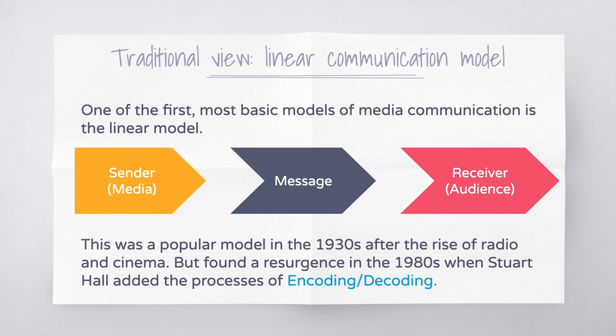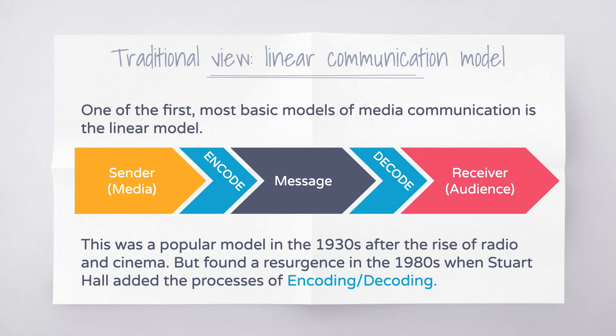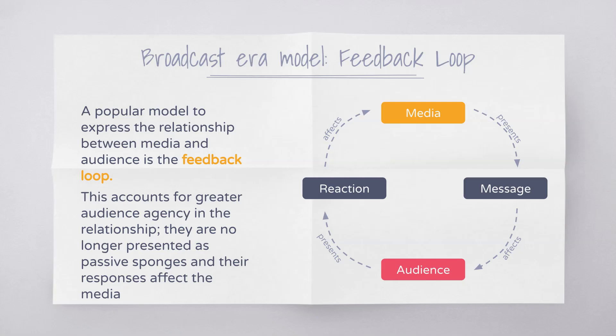That theory of influence has since been heavily criticized and other theories have come to light. But it's important to note that this linear model of communication actually found a resurgence in the 1980s when the theorist Stuart Hall added the processes of encoding and decoding — not to explain the influence of the media, but just to understand how media messages and communication occurs. Hall suggested that the sender would encode a message by applying the codes and conventions of narrative and ideology, and then it was up to the audience to decode that message and understand the meaning behind it.